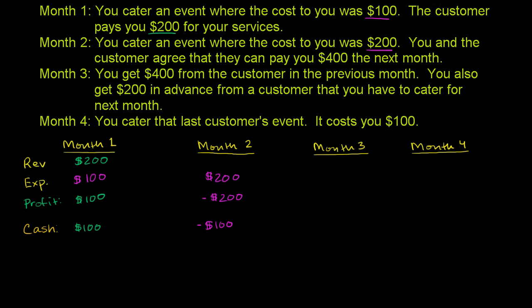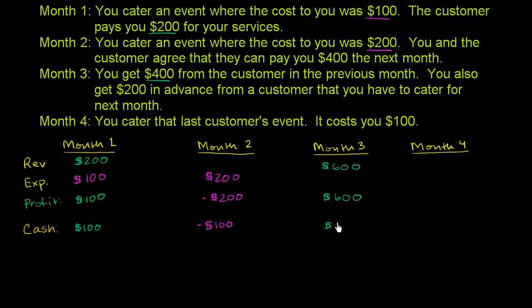In month three, you get $400 from the previous month's customer. You also get $200 in advance from a customer you have to cater for next month. So we've done no catering this month, but we've gotten a lot of money — $400 from the prior month's customer and $200 for next month's event. On the cash basis, that's $600 in revenue with no expenses, so we have $600 in profit, and our cash balance increases by $600. At the end of this month, we now have $500.